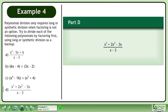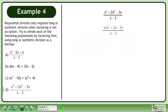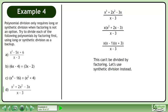In part d, we'll divide x³+2x²-3x by x-3. Factor out x from the numerator. Factor x²+2x-3 to get (x-1)(x+3). This can't be divided by factoring. Let's use synthetic division instead.